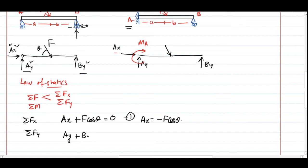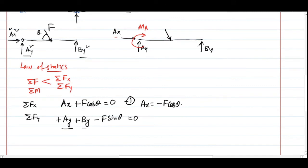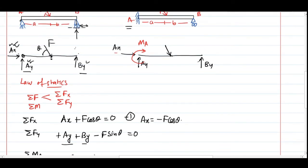For vertical force balance: Ay + By − F·sinθ = 0. Since two forces are upward and F·sinθ is downward, it gets a negative sign. With two unknowns here, we need a third equation — the moment balance. Taking moment balance at point A eliminates Ax and Ay since both forces pass through A, leaving By·(a+b) and F·sinθ·a.